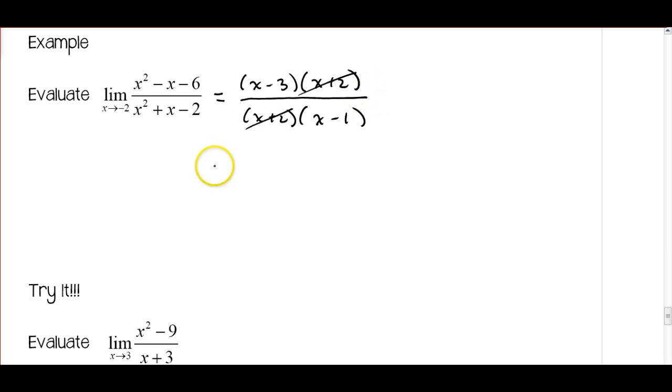And then once we do that, we can use direct substitution, and now we'll plug in our value of negative two. So I have negative two minus three over negative two minus one, which gives us negative five over negative three, or a limit of five-thirds.